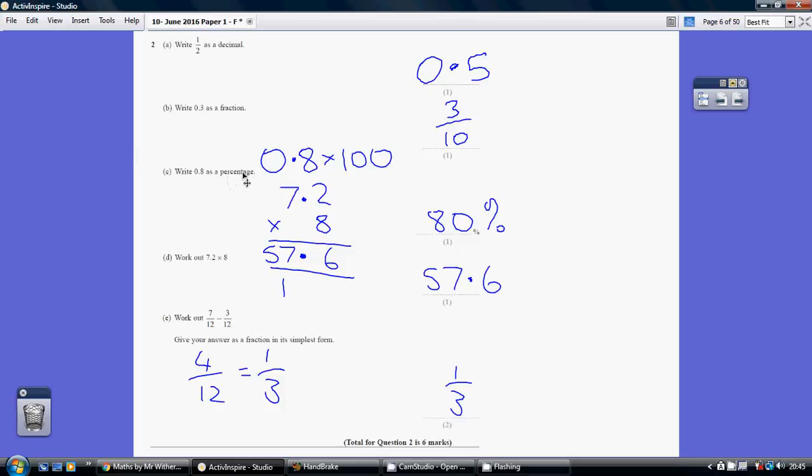Write 0.8 as a percentage. Think of 0.8 as being 0.8 out of 1. A percentage means out of 100. To turn it to being out of 100, you've got to multiply it by 100. So 0.8 times 100 is 80%. Part D,